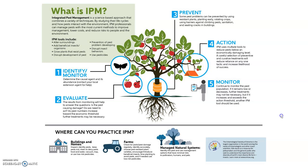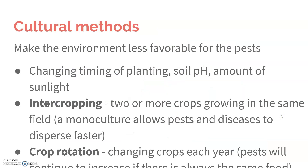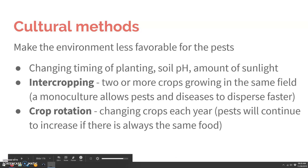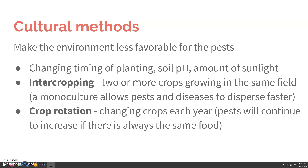Cultural methods make the environment less favorable to the pest. This could be changing the timing of your planting, changing the soil pH, the amount of sunlight, and also using things like intercropping or crop rotation. Intercropping is when you grow two or more crops in the same field, because if you have a monoculture then it makes them all vulnerable to that same pest.